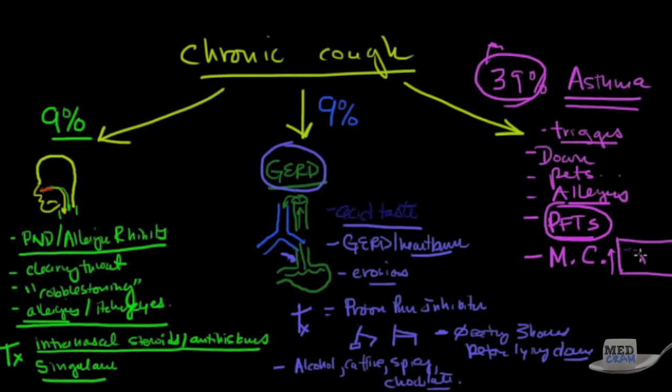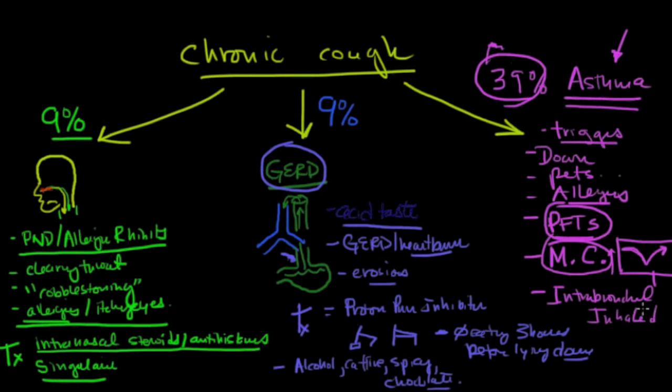If they drop down, then you know that they are susceptible to methacholine, which means they're asthmatic. And then you give them an albuterol treatment and they come back up again. If that happens, then you know the methacholine challenge test was positive. Then it's asthma you're talking about. And if that's the case, then you're going to use inhaled intrabronchial or inhaled steroids. That's exactly how you treat asthma.